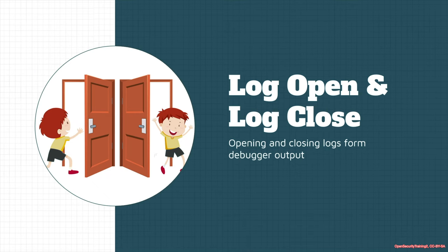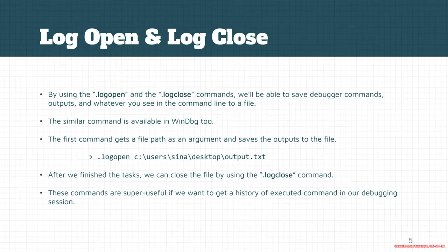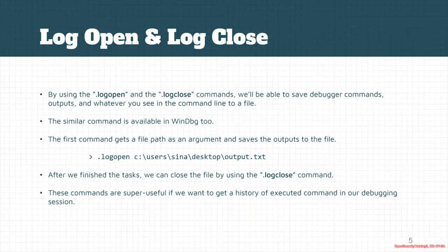The first thing we're going to talk about is log open and log close. There are two commands, exactly the same as WinDbg, for creating logs from the debugger. The first command is log open, or dot log open. This command takes a text file as input and will save the debugger output — whatever you type or whatever you see in the debugger console — to the target file. After we finish and no longer need to save the debugger outputs, we can use the log close command to close the file.